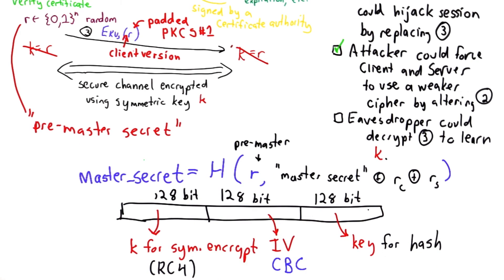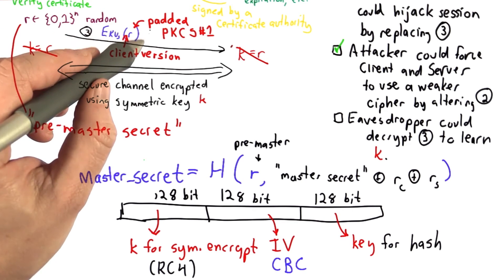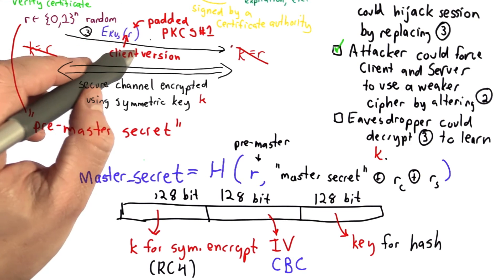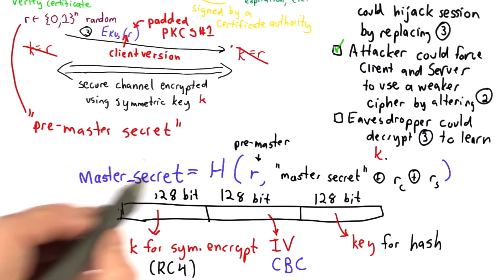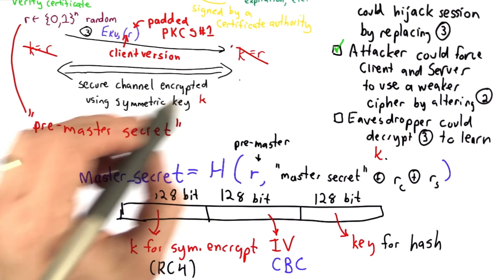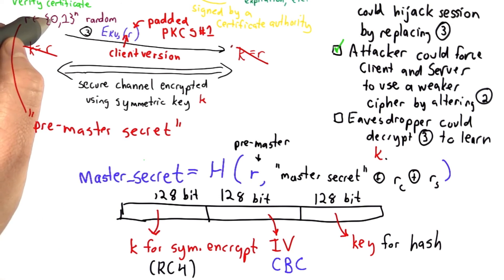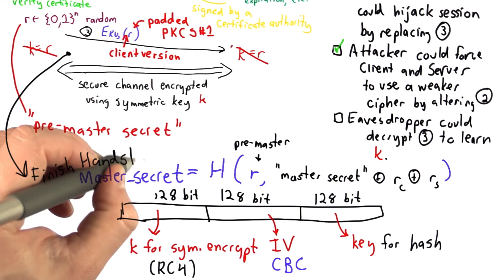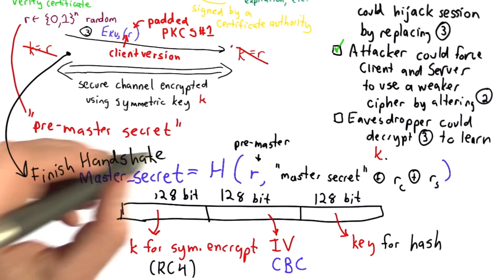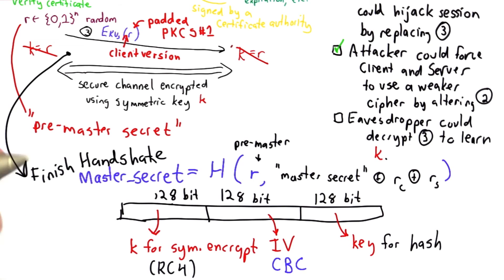So this change means if an active attacker can interfere with this message, they still can't control what gets computed here. This depends on randomness used in the previous two steps. And what happens before the channel is used for anything secure is the client and the server need to verify that they got the same key. So we add a step here to finish the handshake. And the way that step works is we encrypt the finished message using the key extracted from the master secret.